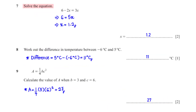Solve the equation 6 minus 2x equals 3x. When we group like terms we get 6 equals 5x, and when we divide both sides by 5 we get x equals 1.2.